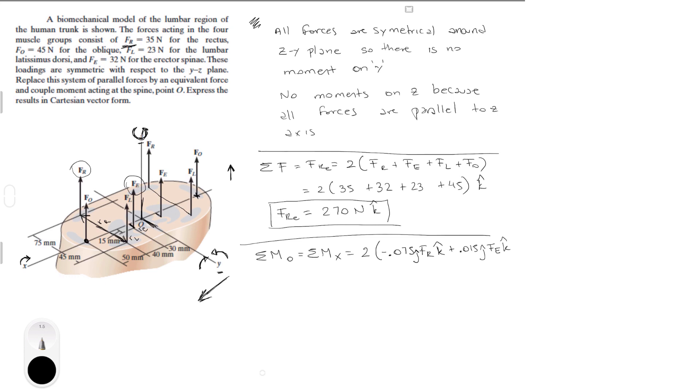Then we get plus 0.015 in the j times F_E in the k. That is this one. I'm going to go down here because I'm writing out of space.